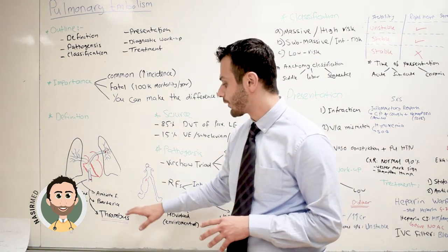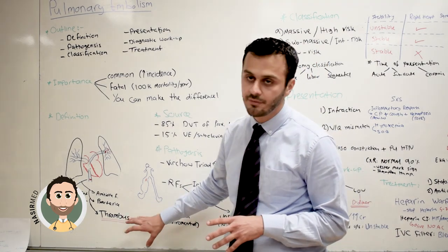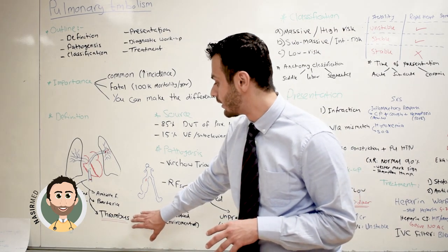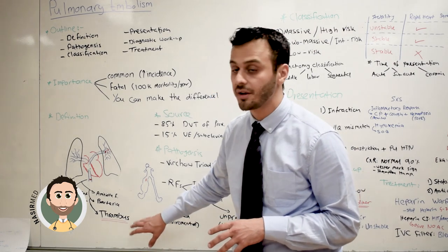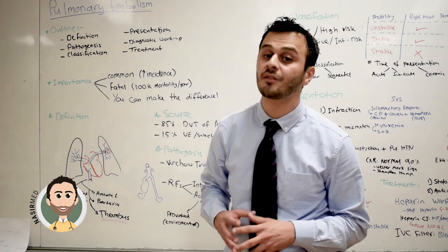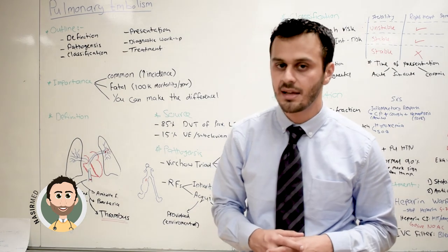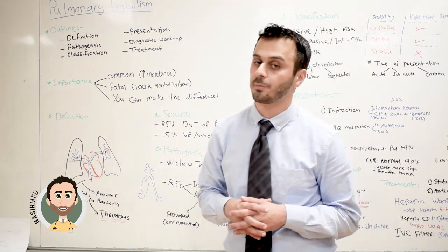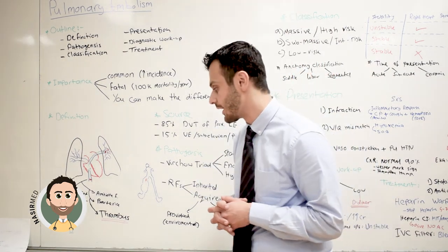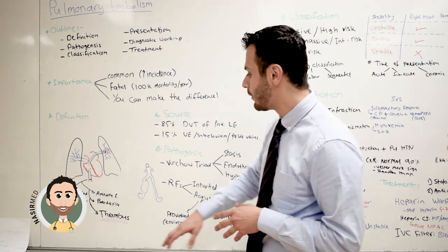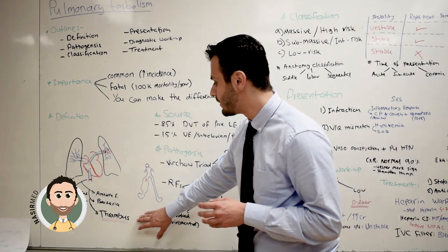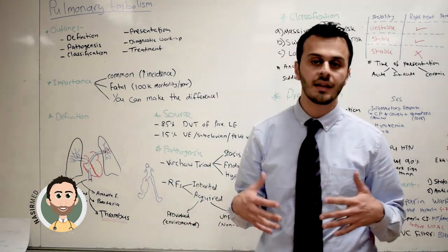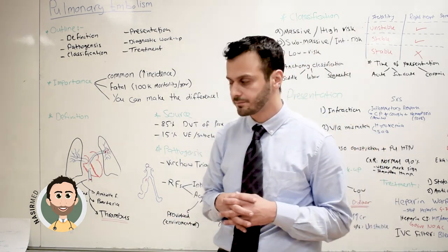However, the most common form of pulmonary embolism is made of a thrombus, and that's the main focus of our presentation today. This thrombus can come from any vein in your body.